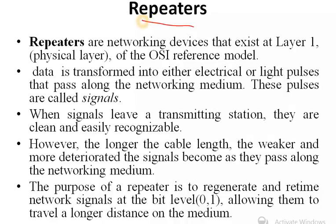One of the network devices we will discuss is the repeater. A repeater is a network device that exists at the physical layer of the OSI reference model. Data is transformed into either electrical or light pulses that pass along the network medium. These pulses are called signals.